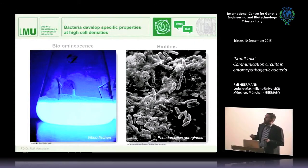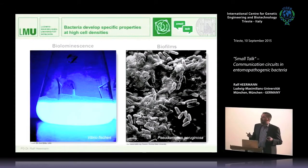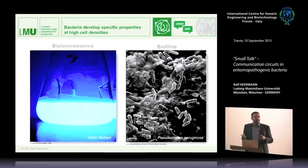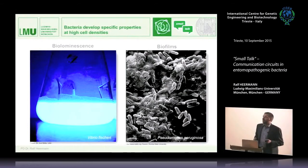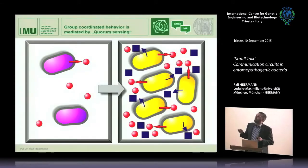You can imagine that for these organisms it just makes sense when they produce these very cost-intensive things like light or biofilm matrix — it just makes sense when there is an effect, so that somebody can see the light or that they can organize in a biofilm. This was the first indication that bacteria might sense how many of them there are, and when a certain cell density — a quorum — is reached, they start to produce their specific phenotypes.